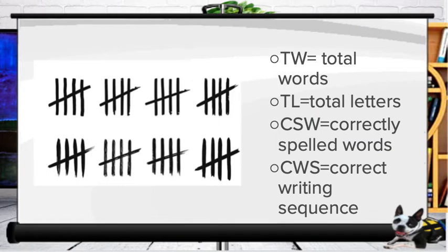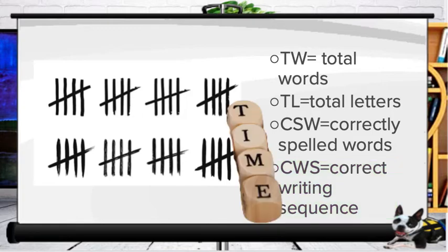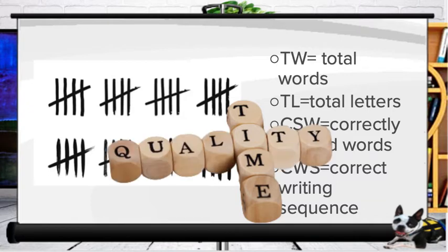You have several options when it comes to scoring the CBM writing probes. You can score student samples according to the number of words written, the number of letters written, the number of words correctly spelled, or the number of writing units placed in correct sequence. Scoring methods differ in both the amount of time it takes to score the probes and in the quality of information they provide about a student's writing skills.